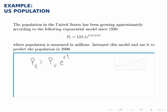Matching up the general exponential model with the example we're given, we see that P₀ is 123.1, which means that in 1930 the population was just over 123 million people. And we notice that r is 0.012177, or about 1.2 percent. So growth rate since 1930 has been about 1.2 percent.